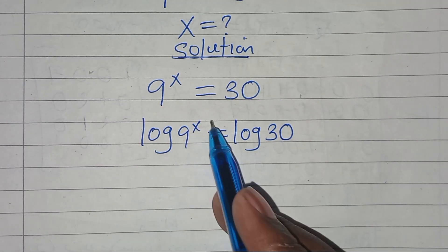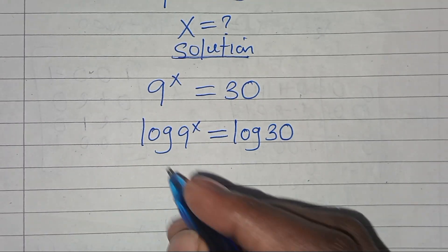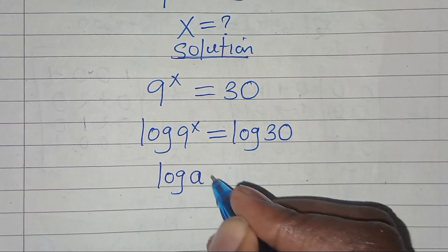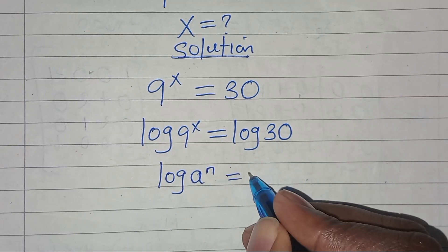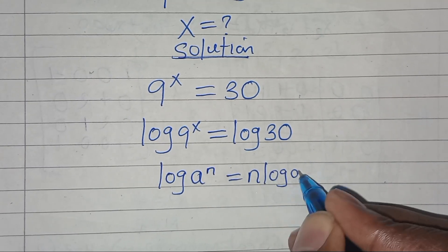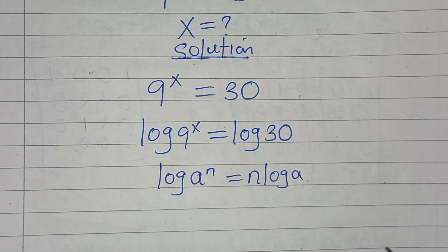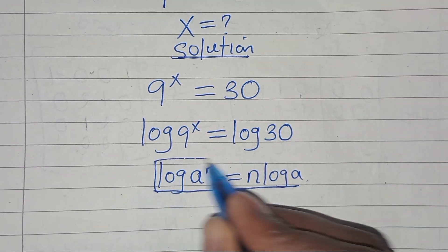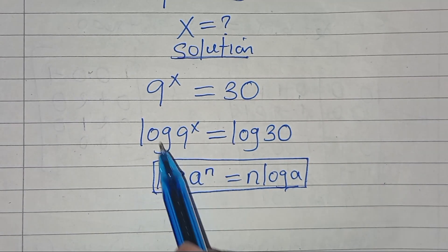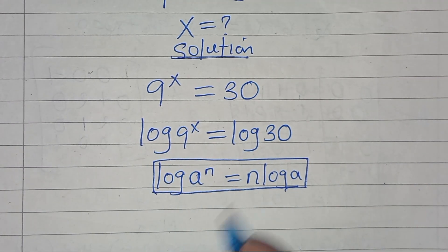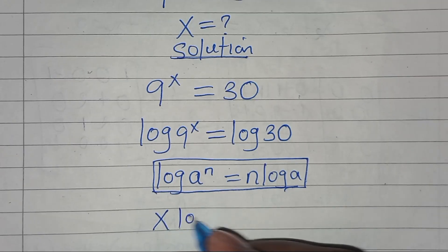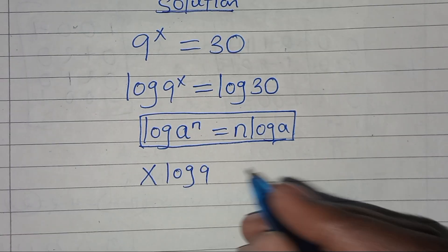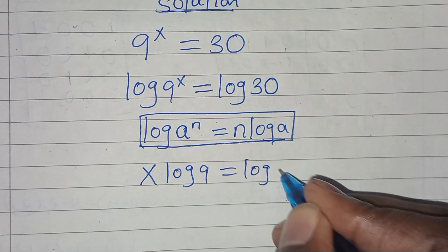We find that log 9 to power x is in the form of log a to power n, which we can express as n·log a. Applying this power property of logarithms, log 9 to power x becomes x·log 9, and this equals log 30.